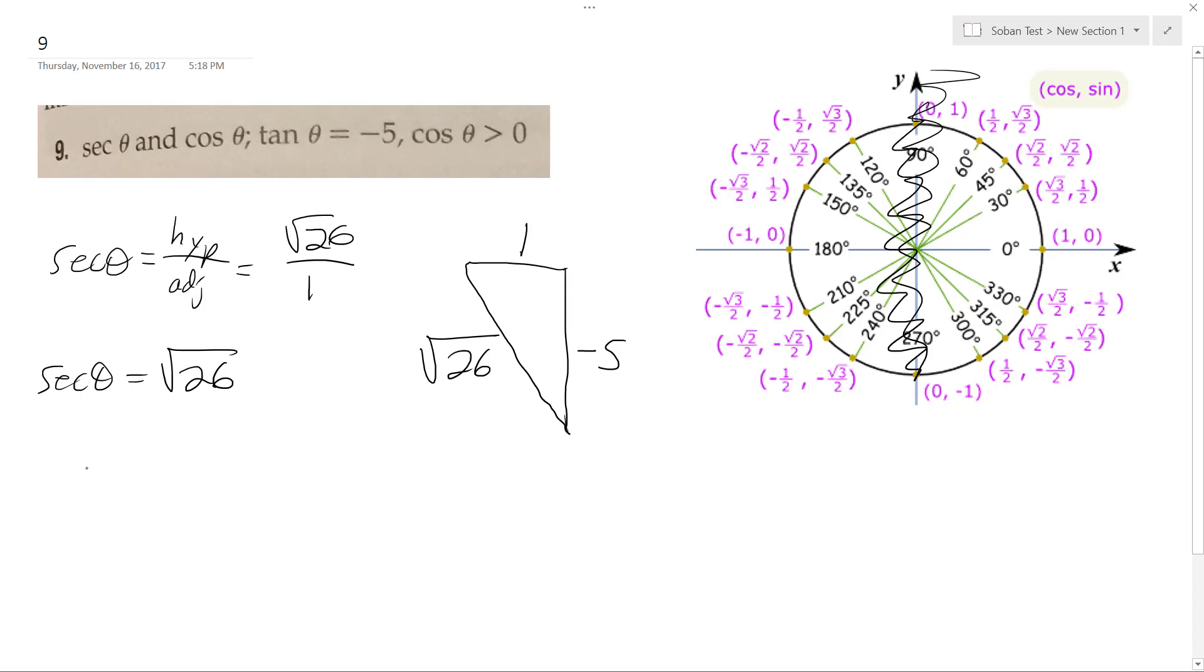And then the cosine is just going to be equal to one over root 26, and then you rationalize the denominator, so it just becomes root 26 over 26. That's it.